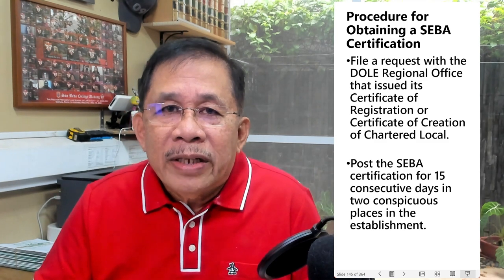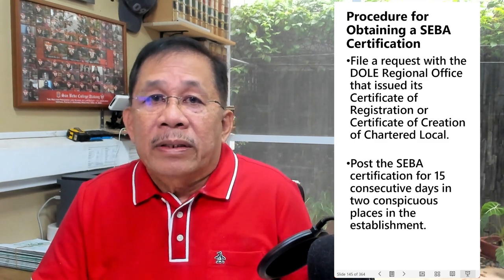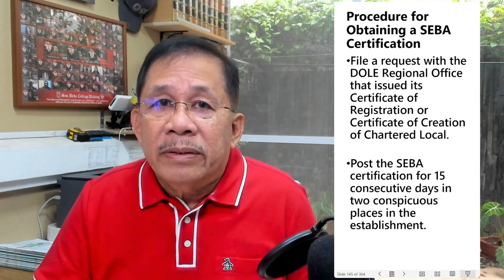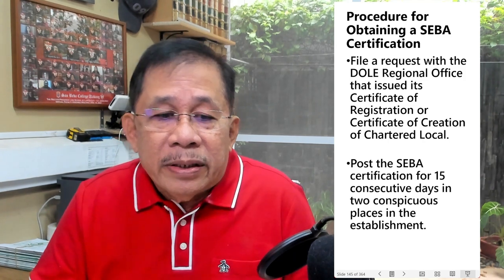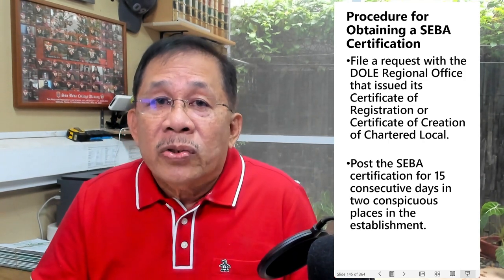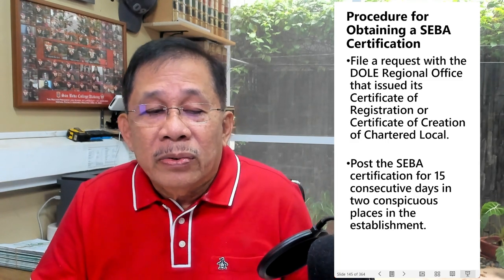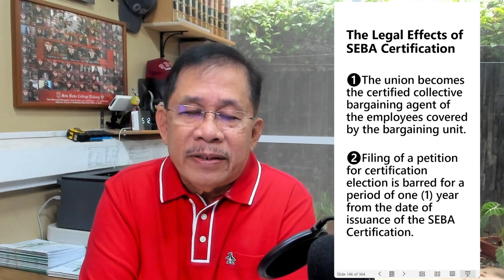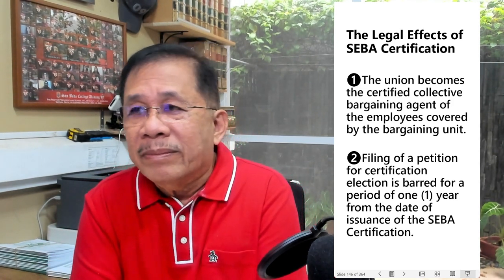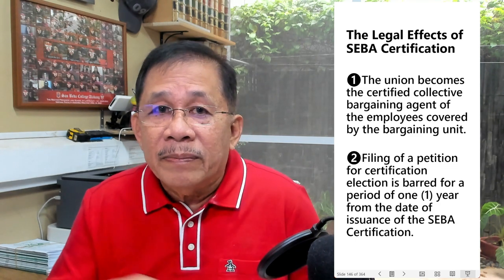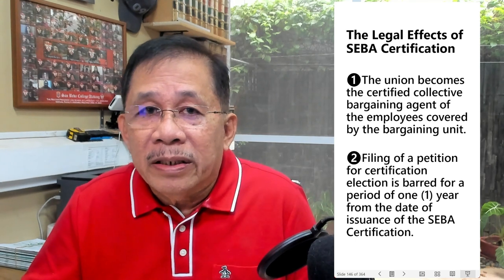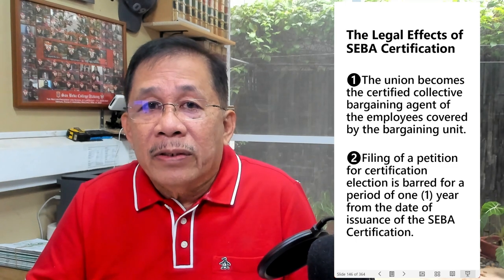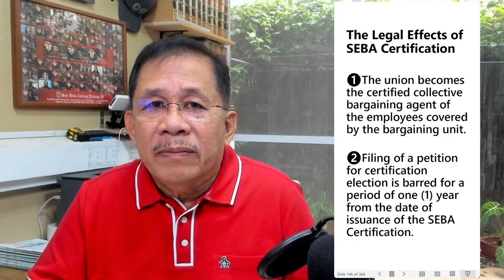To obtain a SEBA certification, the union should file a request with the Department of Labor regional office that issued its certificate of registration. If a SEBA certification is issued, it must be posted for 15 consecutive days in the two most conspicuous places in the establishment. The effect is that the union becomes the certified bargaining agent, and filing of a petition for certification election is barred for one year from the issuance of the SEBA certification.